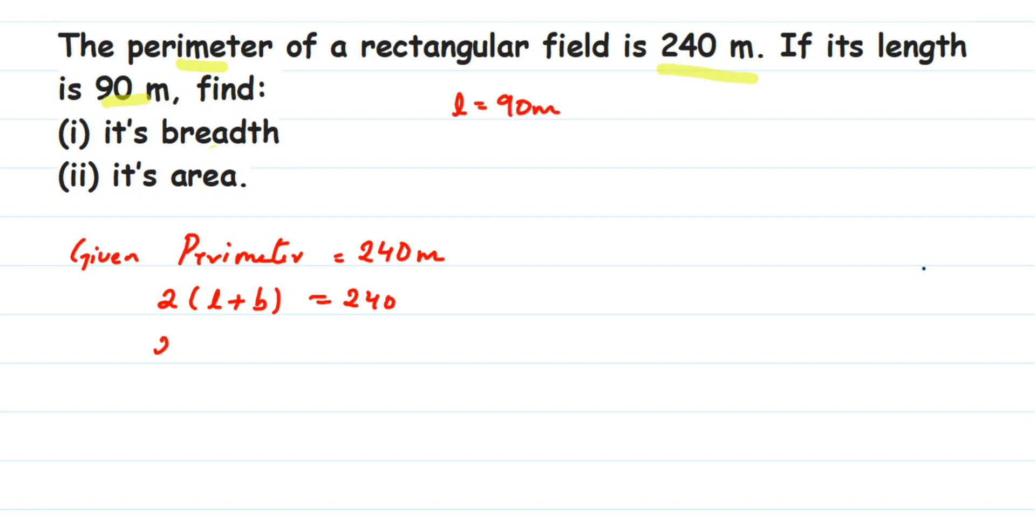2 times 90 plus b equals 240. Since we have to find the breadth, I'm going to put b. Now, 90 plus b is inside the bracket like one term. 2 is in multiplication, so we're going to transpose it - it's going to come in division.